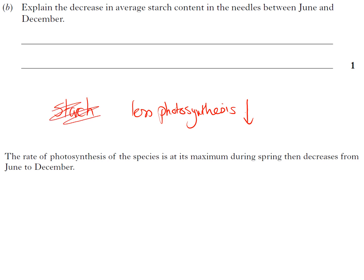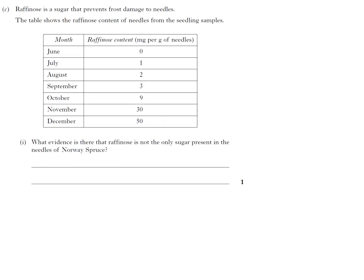Right, so you've never heard of raffinose. They are telling you stuff about it. Raffinose is a sugar that prevents frost damage to needles—statement of fact. You're going to use that later. The table shows the raffinose content of needles from the seedling samples. So in June there was none at all, and then as you got through to December it increased. You're like, okay.